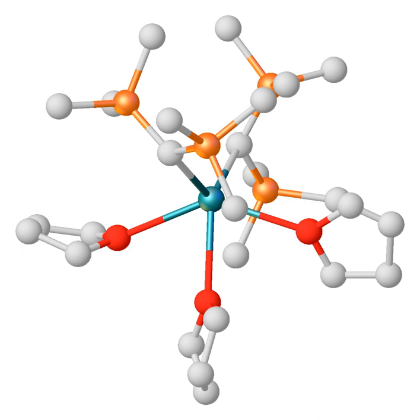The group 2 elements are known to form organometallic compounds. Of these, organomagnesium compounds, usually in the form of Grignard reagents, are widely used in organic chemistry, while the other organometallic compounds of this group are largely academic.